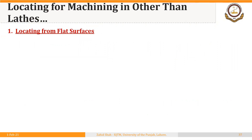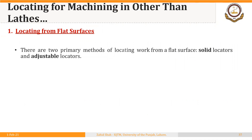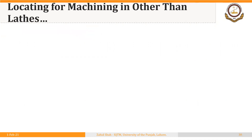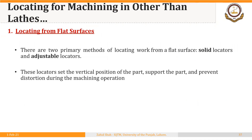There are three methods for locating the workpiece in machines other than lathes. The first is locating from flat surfaces. If we have a flat surface on the part to be located, that should be used as a locating surface. We can locate a part from a flat surface using two types of locators: solid locators and adjustable locators.